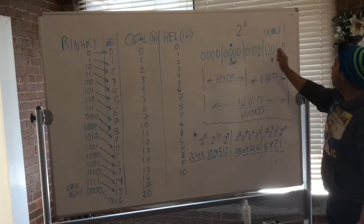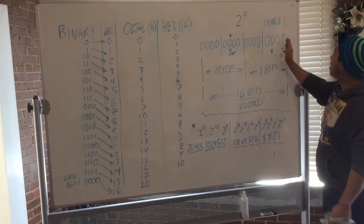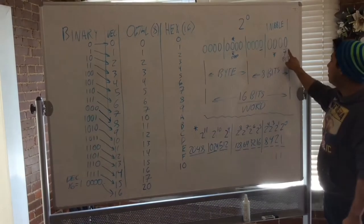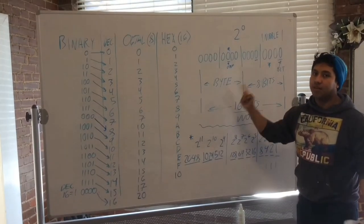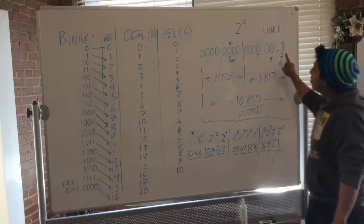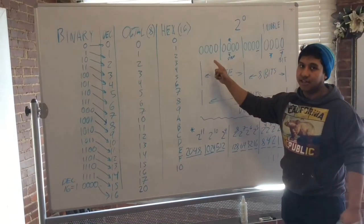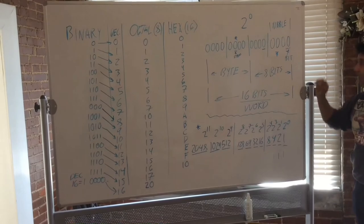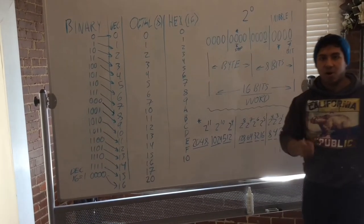So each one is called a bit, like a 7. But then you go to 4, and that's called a nibble. Then you go to 8 bits, which is called a byte. And then you go to 16 of these bits, which is called a word. And each one of these bits have a numerical value.